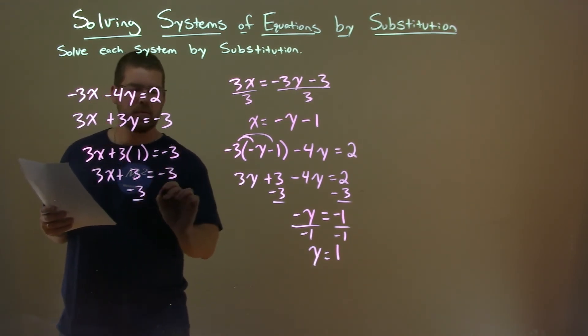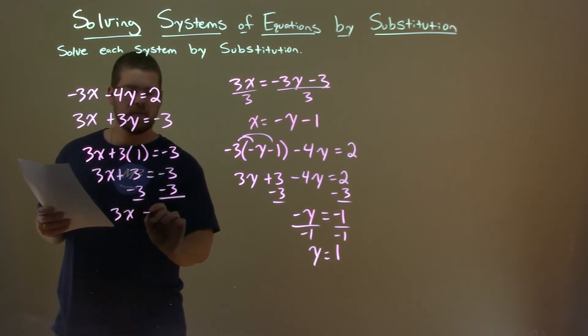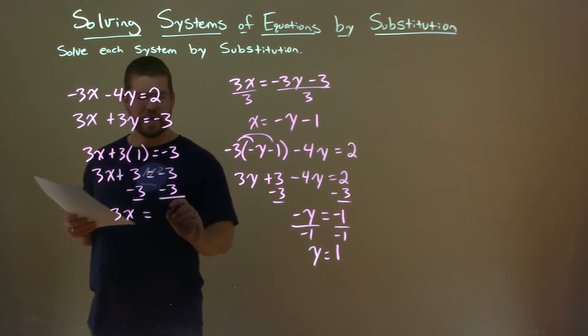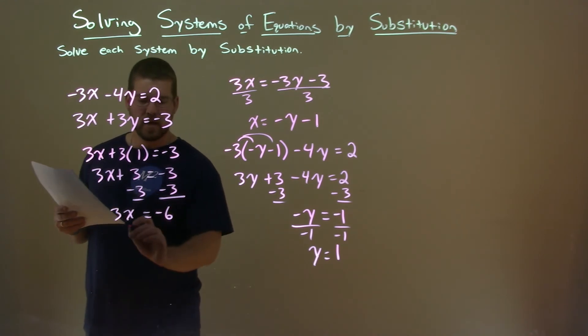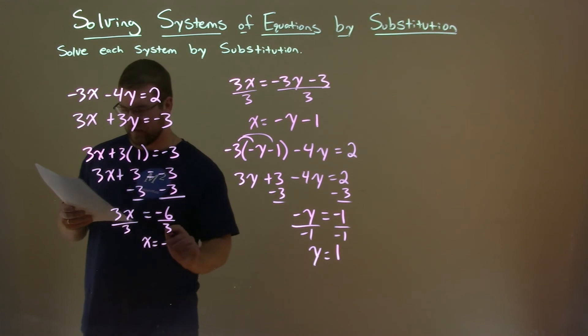Subtract 3 to both sides. 3x is by itself here. And negative 3 minus 3 is negative 6. Divide both sides by 3. And x equals minus 2.